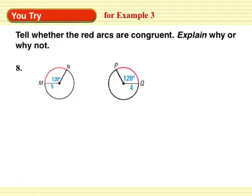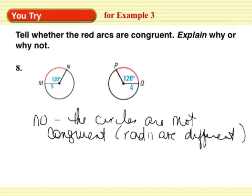Tell whether the red arcs are congruent. Explain why or why not. Nope. The arc measurements are equal. So the measurement of arc MN is equal to the measurement of arc PQ, but the circles are not congruent because the radius here is not equal to the radius there. The radii are different.